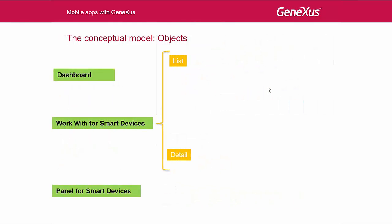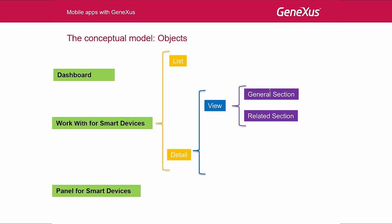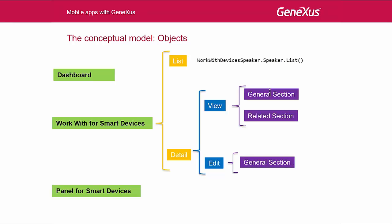If we say that the WorkWithForSmartDevices object contains two other objects, how do we call these objects inside the WorkWith object? The detail will offer two possibilities: call the View or call the Edit. The List of a WorkWith object will be invoked with this syntax — this is the name of the transaction to which the WorkWith object has been applied — and so, with the List method, we will be calling the List, which in this case contains the Speakers. If we want to invoke the Detail in View mode, we will call it with the Detail method, passing it the SpeakerId as the primary key that identifies the Speaker.